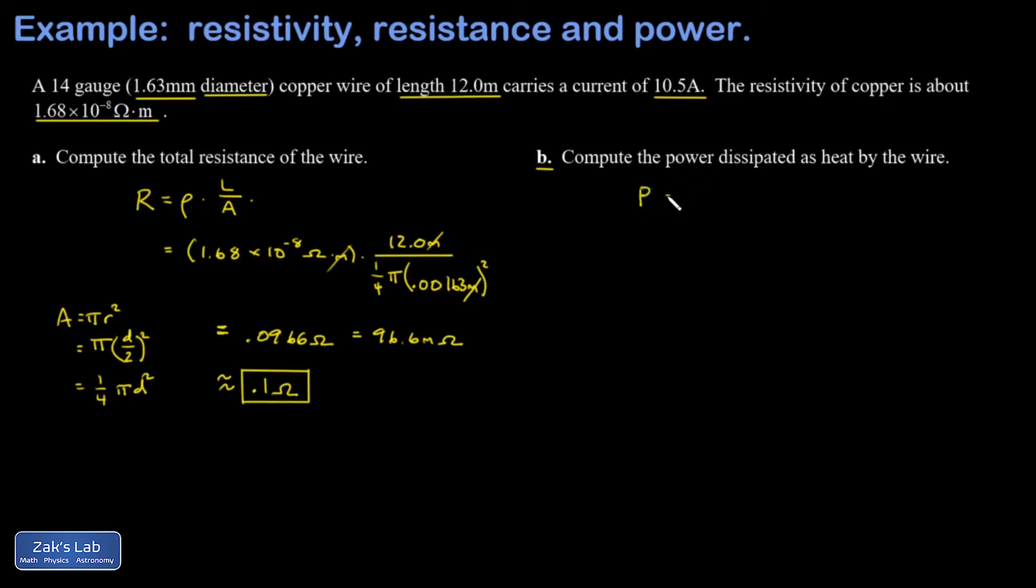What I know here is the current and the resistance, so I'm going to use I squared R for the power. I'll post a link to the video where we derive this. I is 10.5 amps squared, my resistance is 0.0966 ohms. When I run the numbers on this I get 10.7 watts of power.